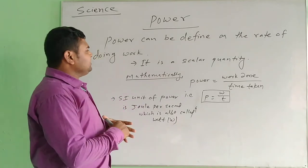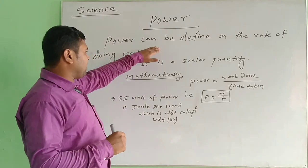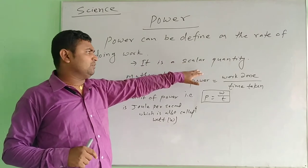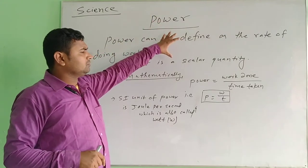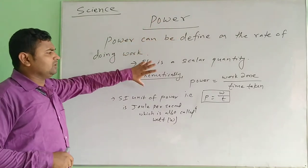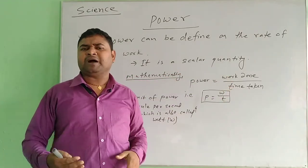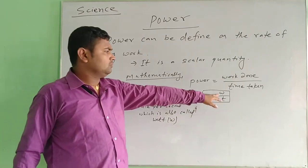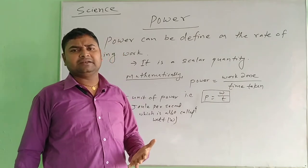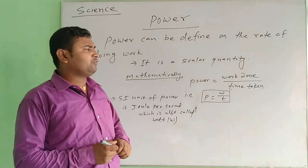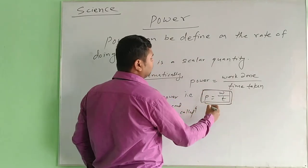Power is a scalar quantity because it has magnitude but no direction. Power depends upon the work done divided by time. When we calculate the power, the formula is P = W/T — that is, work done divided by time taken. We can also write W = F × d, so power P = F × d / T. The SI unit of power is Joule per second, also written as Watt.